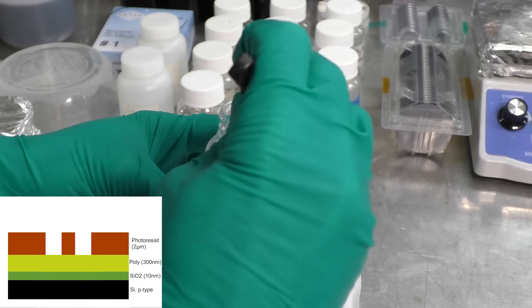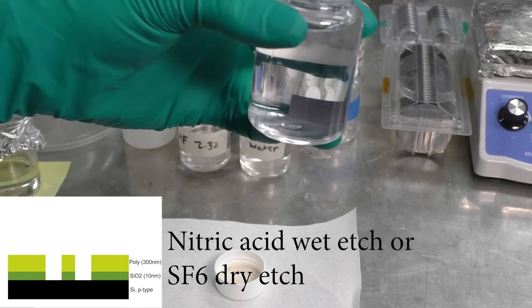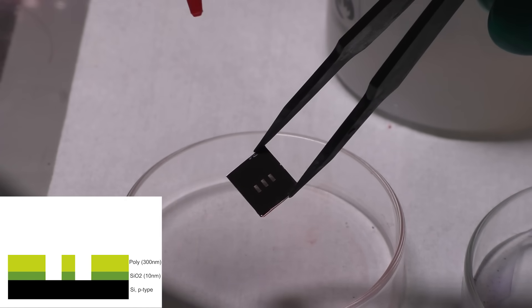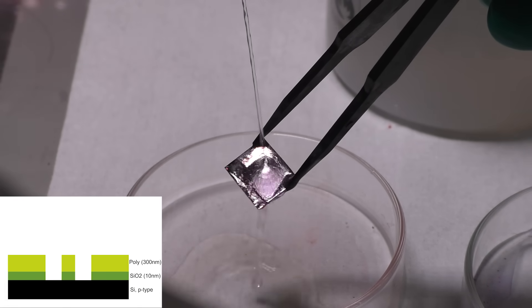Now that the image is formed in the photoresist, I transfer that into the underlying polysilicon layer using an etchant. Once it's etched, we don't need the photoresist mask layer anymore, so that can be stripped off using acetone.